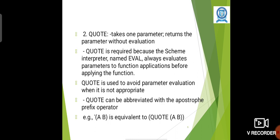Quote takes one parameter and returns the parameter without evaluation. Quote is required because the Scheme interpreter named eval always evaluates parameters to functions applications before applying the function. Quote is used to avoid parameter evaluation when it is not appropriate. Quote can be abbreviated with the apostrophe prefix operator. For example, apostrophe (A B) is equivalent to quote (A B).